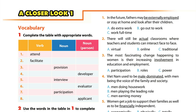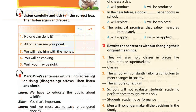Unit 11, Page 62. A Closer Look 1. Pronunciation. Activity 5. Listen carefully and tick the correct box. Then listen again and repeat.